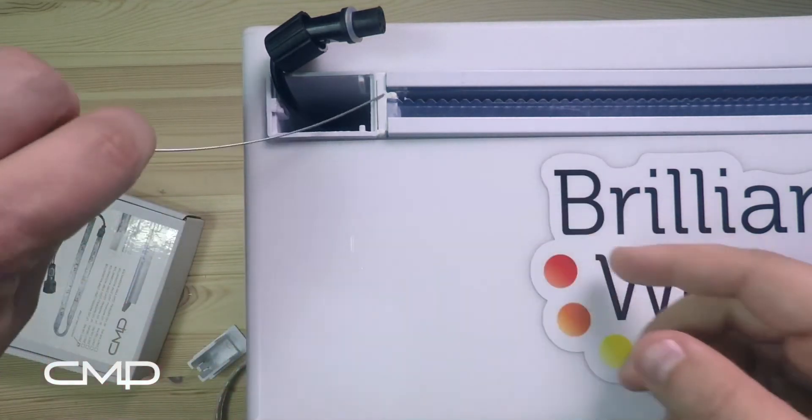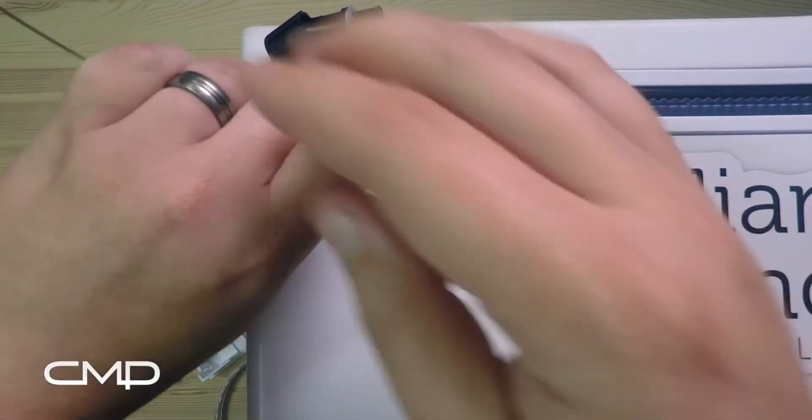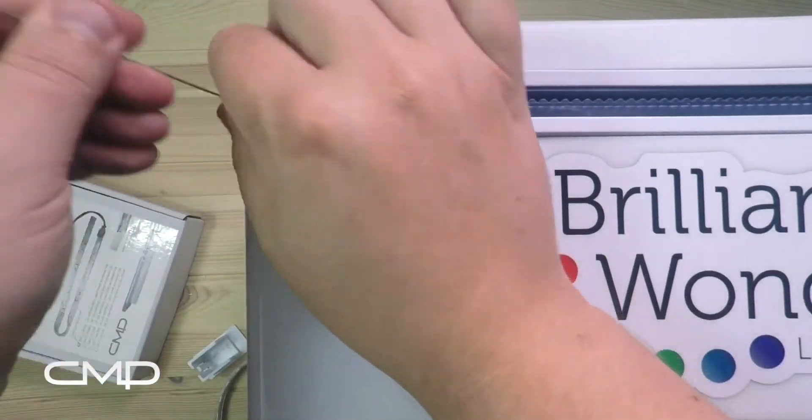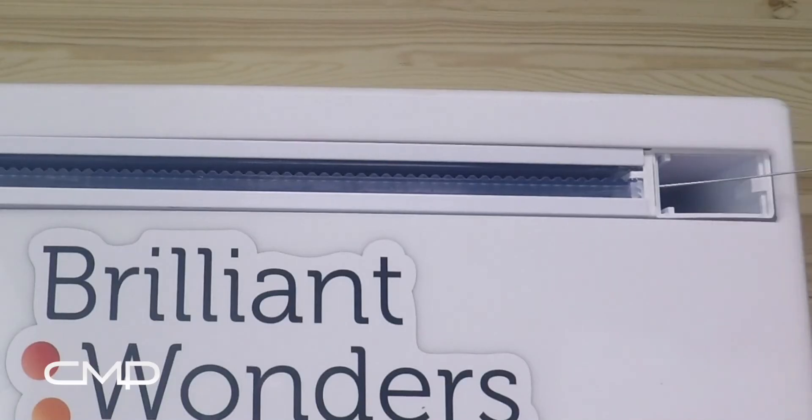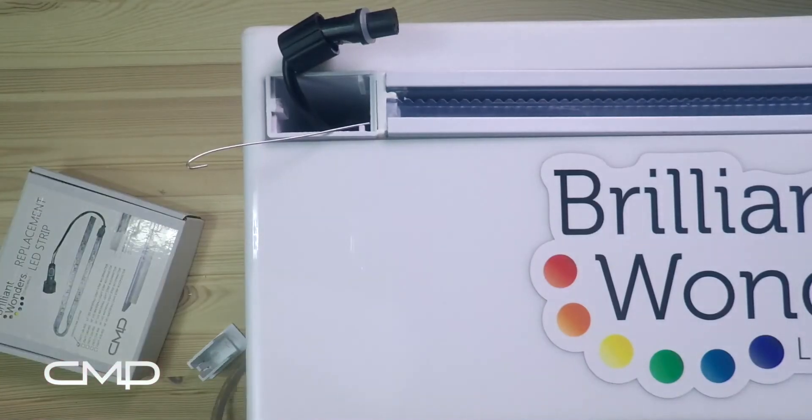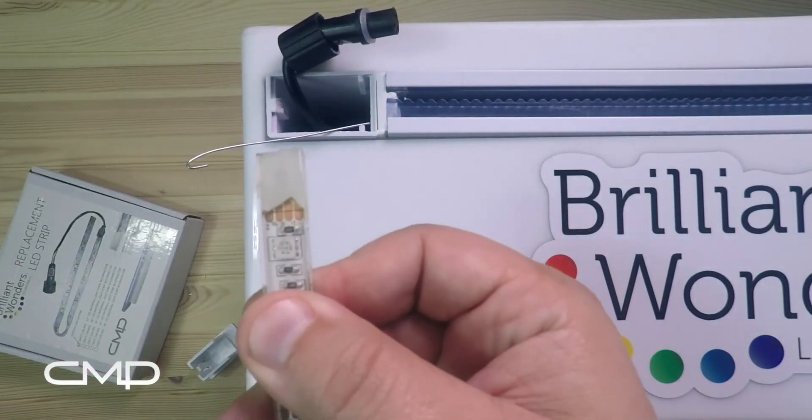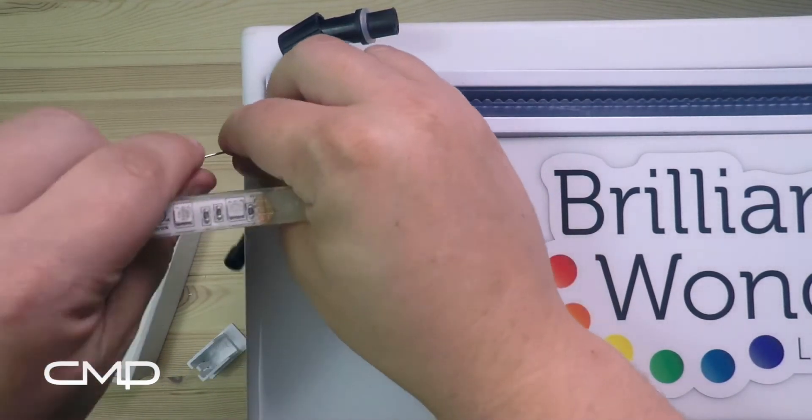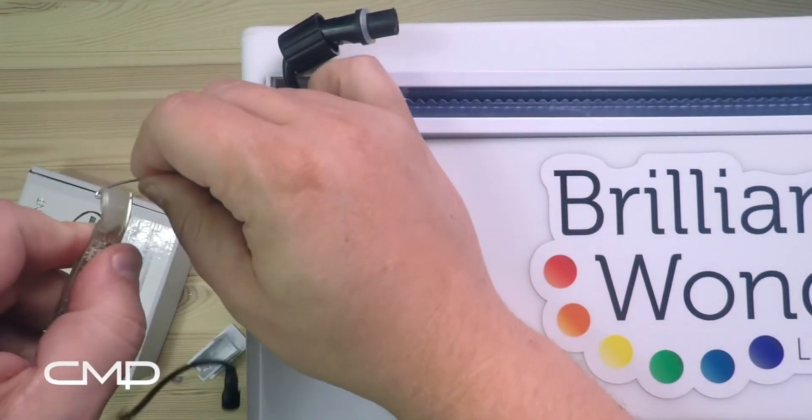It should be really easy to slide it through there, and you should have extra to work with. Once you got it through, get the end of your new LED strip and you can hook the wire into the bottom of your new strip.